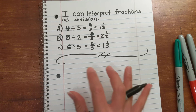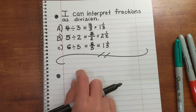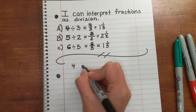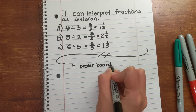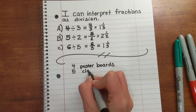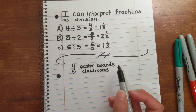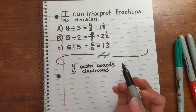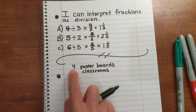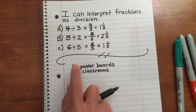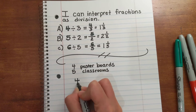Word problems sometimes try to trick you on which number you write first and which number second. Let's say I have four poster boards and five classrooms. Each classroom needs a part of the poster boards. Is it 5 divided by 4, or is it 4 divided by 5? What I like to think is: what am I dividing, and what is it going into? Just because 4 is first does not mean it goes first — you have to look at the situation. In this case, it does go first because you have four poster boards.